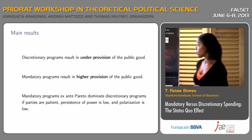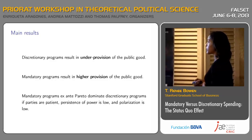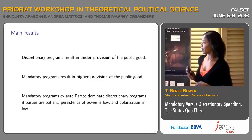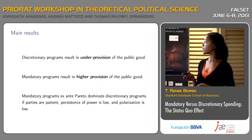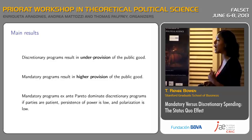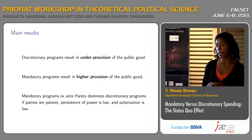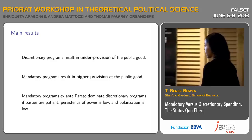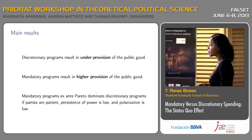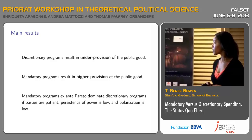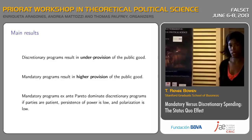So what are the main results that we'll find? We're going to find that discretionary programs by and large result in under-provision of the public good, and mandatory programs result in higher provision of the public good. In some cases, mandatory programs extend to Pareto-dominate discretionary programs. This is true when parties are sufficiently patient, when the persistence of power is low, and when political polarization is low.